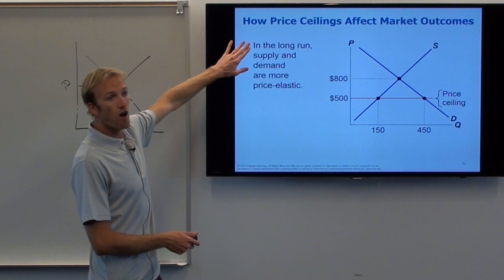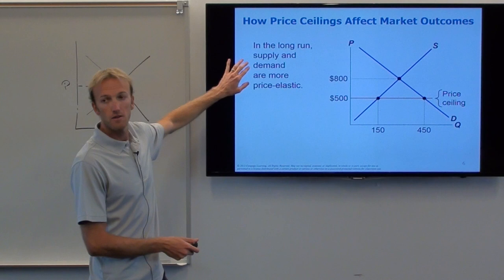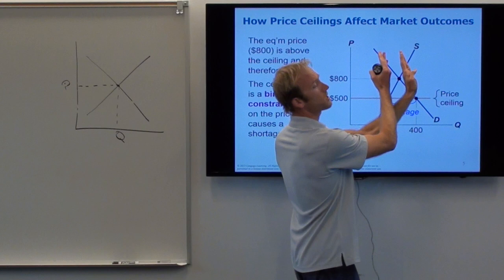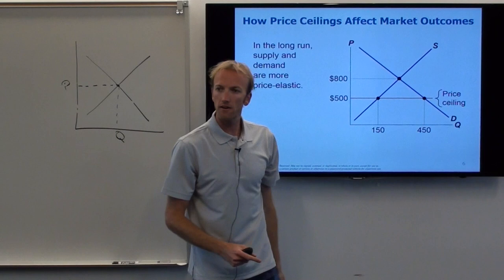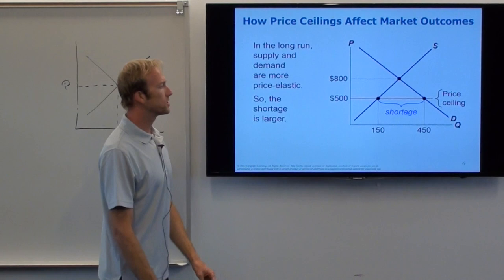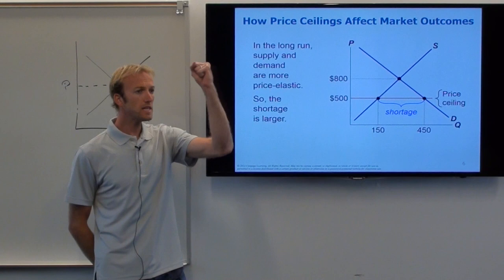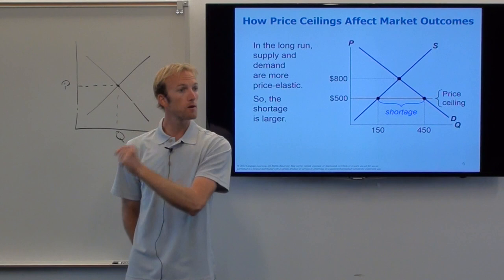In the long run, we know that things are more elastic. Which means the curves are less steep — flatter. What does that do to the shortage? It actually increases the shortage. In the short run we had a shortage of about 150, but in the long run we've got a shortage of around 300. Not only is the price ceiling bad right now, but the problem gets worse as time goes on.